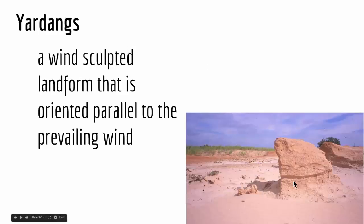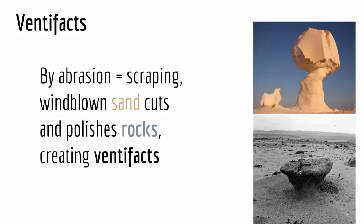Finally, yardangs are wind-sculpted landforms oriented parallel to the prevailing wind. As you can see in this picture, you can guess the wind direction from the yardang orientation. Yardangs are parallel to the prevailing wind, whereas ventifacts are not parallel to the prevailing wind but are instead made by the scraping of wind-blown sand that cuts and polishes rocks. With this we come to the end of our lecture.